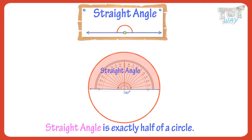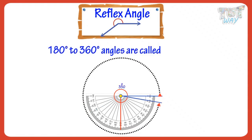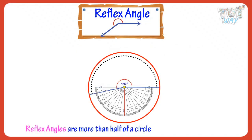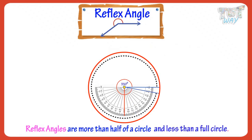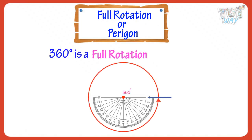Now let's learn what reflex angles are. Angles from 180 degrees to 360 degrees are called reflex angles. So reflex angles are more than half of a circle and less than a full circle. Now let's learn what a full rotation is — 360 degrees is a full rotation, or a full circle.